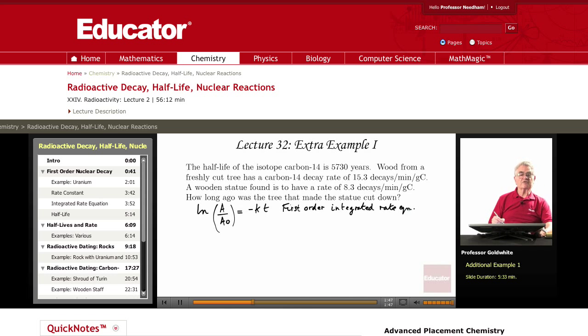And we know the relationship between K and T1/2, which is what is given. K equals 0.693 over T1/2 equals 0.693 divided by 5730 years, which equals 1.21 times 10 to the negative 4 per year.